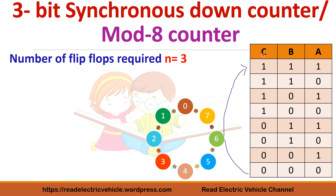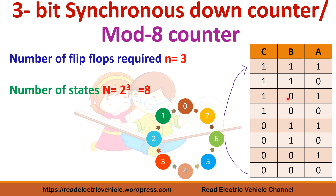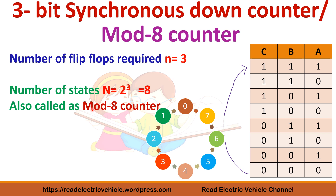In the up counter, after 0 it goes 1, 2, 3, 4, 5, 6, 7, and after 7 it goes back to 0. But in the down counter it is just the opposite — it starts with 7, 6, 5, 4, 3, 2, 1, and from 0 it goes back to 7. This counter also has 8 states, so it is called a mod-8 counter. A 3-bit synchronous counter in general can be called a mod-8 counter, whether it is an up counter or down counter.